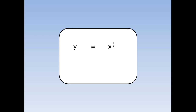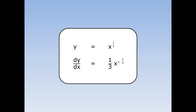If I have fractional indices, the rules are exactly the same. The power drops down the front and multiplies, and a half take away 1 is minus 1 half. Y equals x to the power of a third. Differentiate. The third drops down the front and multiplies, and a third take away 1 is minus 2 thirds.